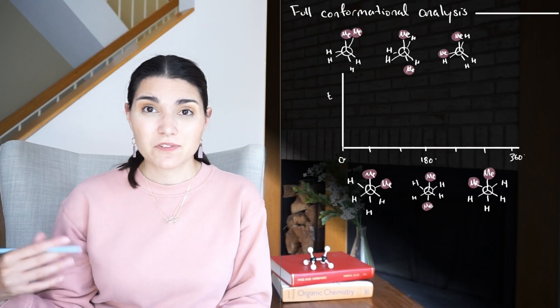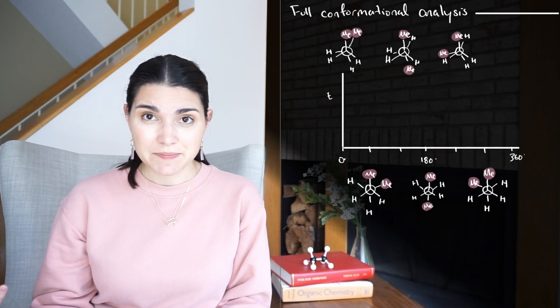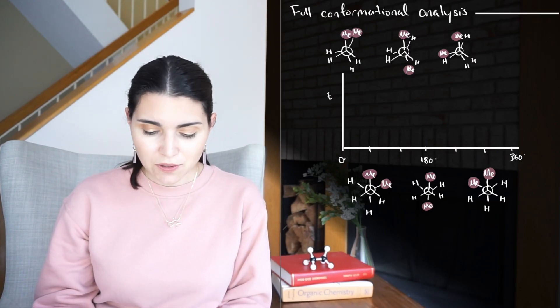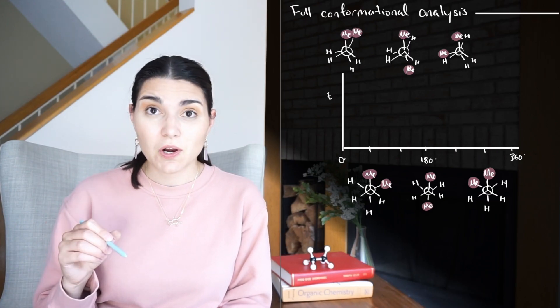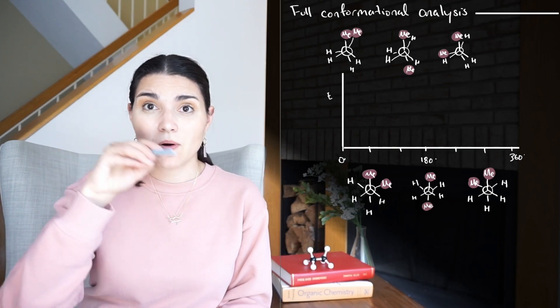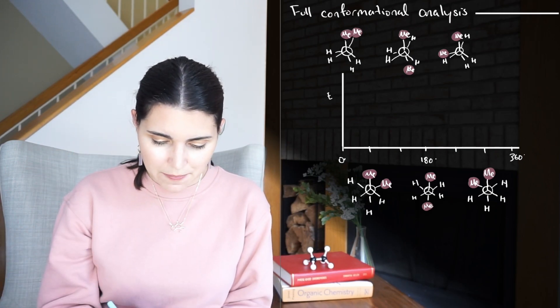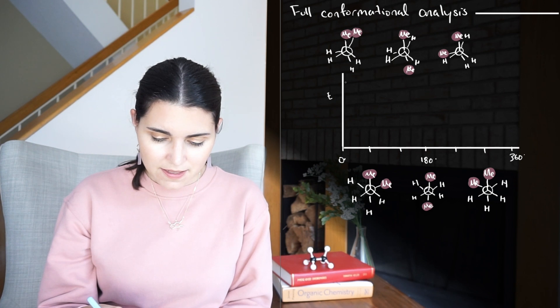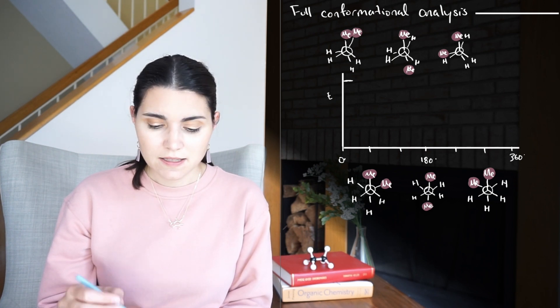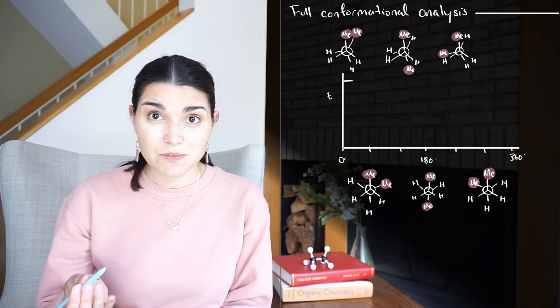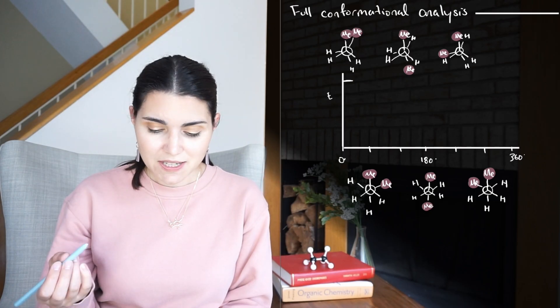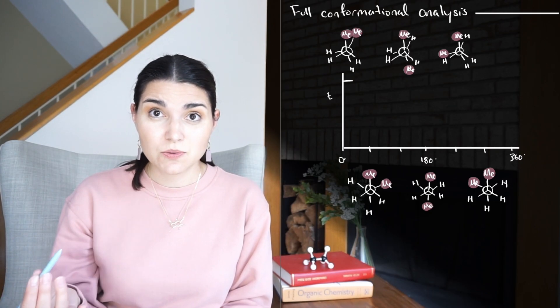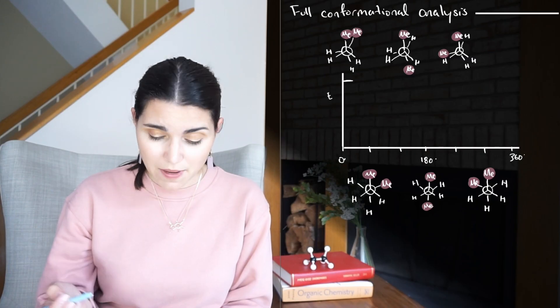Let's do a full conformational analysis for butane. We're going to look at this graph of energy versus dihedral angle. We will keep the front carbon fixed and rotate the back carbon all the way around and look at what happens to the energy. So the first one here is the syn eclipsed conformation. This one has the highest energy because it has the torsional strain and also the steric interaction between those two methyl groups trying to occupy the same space. So we'll draw just a line up here for a very high energy.